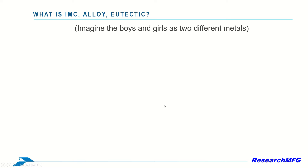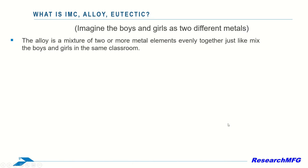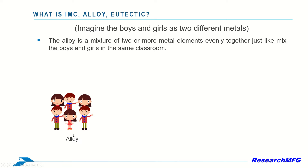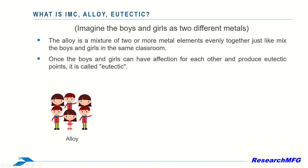Let's imagine boys and girls as two different metals. An alloy is a mixture of two or more metal elements evenly together — just like mixing boys and girls in the same classroom. Once the boys and girls develop affection for each other and produce eutectic points, then we can call it eutectic.